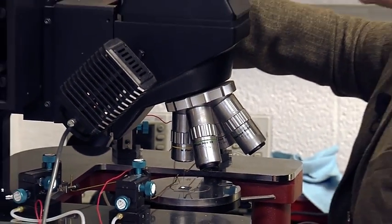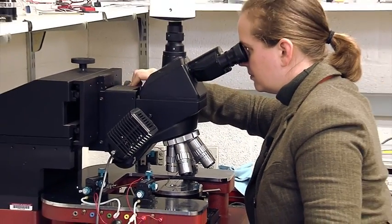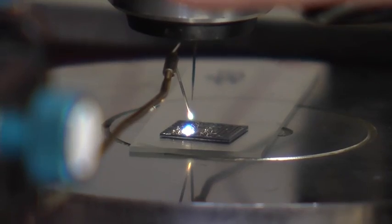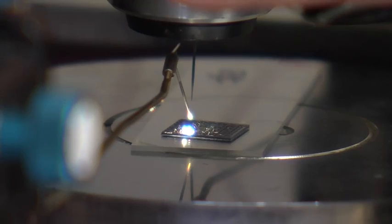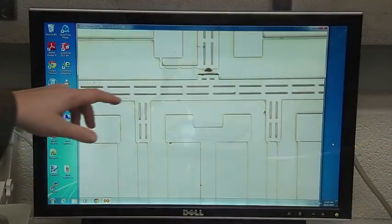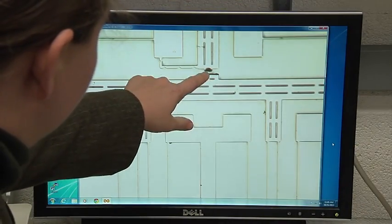Bergbreiter's robots are so small, her team uses a microscope to build them. How do you build anything at this scale? We use the same processes that you use to make integrated circuits.